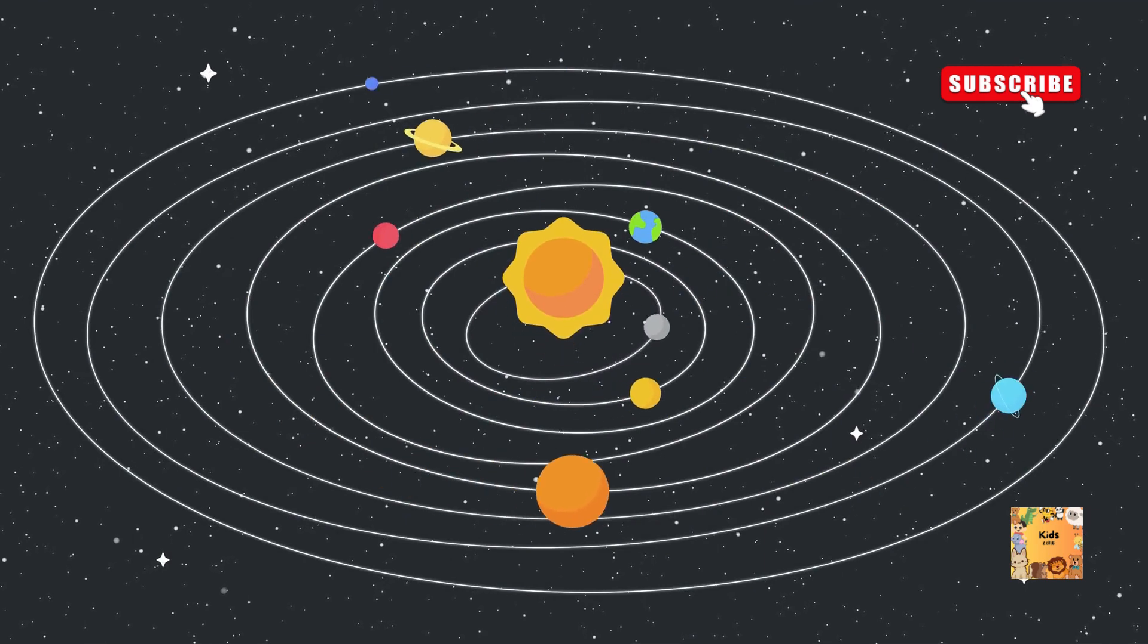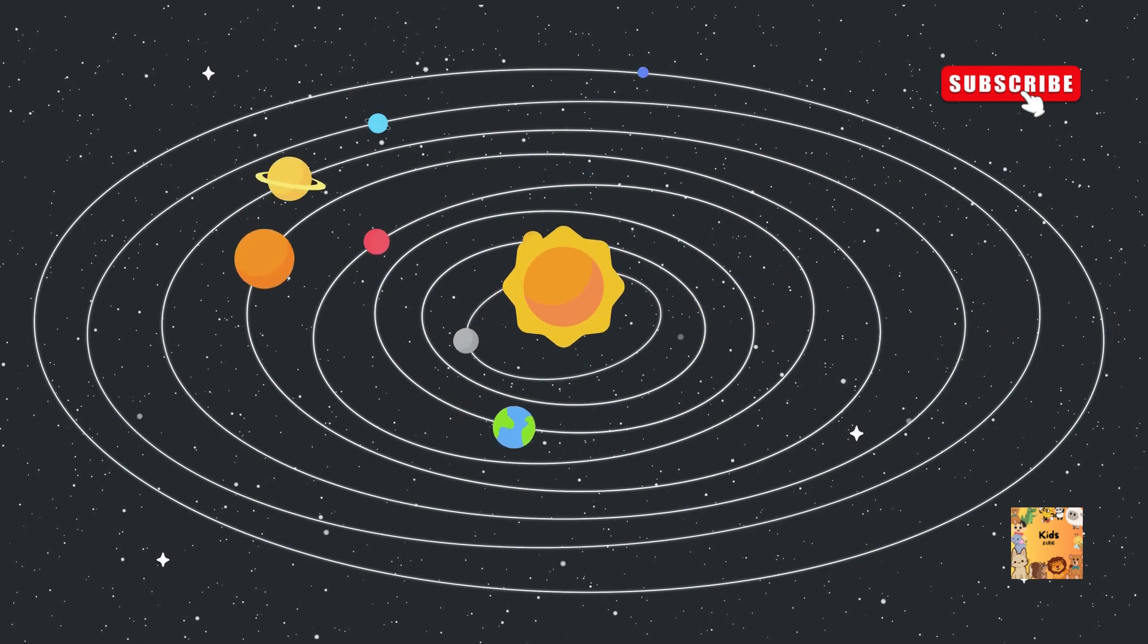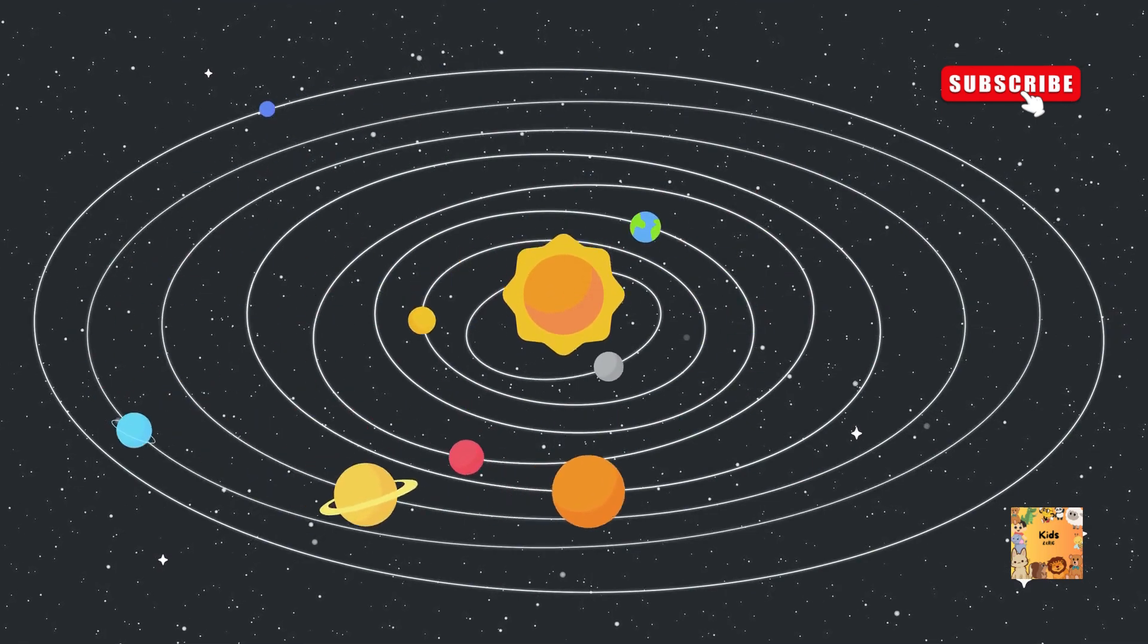Moons. Many planets have moons that orbit around them. For example, Earth has one moon, while Jupiter has more than 70 moons.